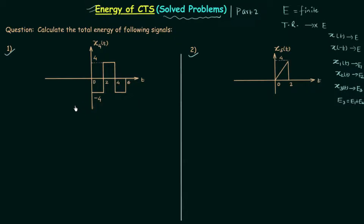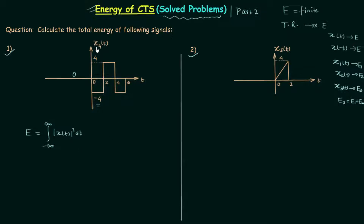Let's start with signal X4(t). You can see the waveform: from minus infinity to zero the signal is zero, from zero to two it is minus four, from two to four it is four, and from four to six it is again minus four. Using the formula for total energy — integration from minus infinity to infinity of |X4(t)|² dt — we set up the calculation.